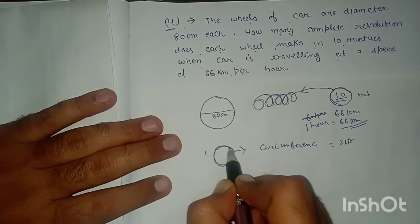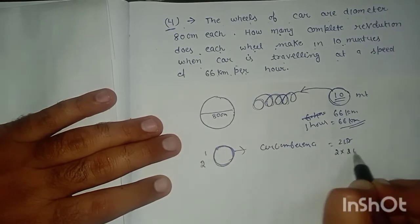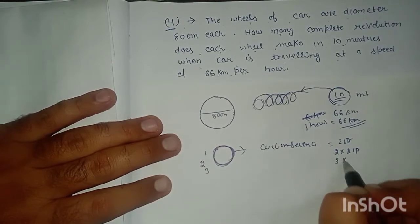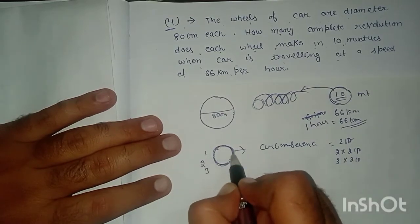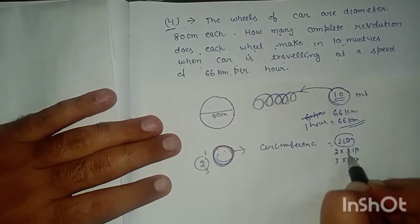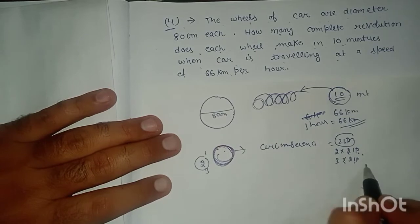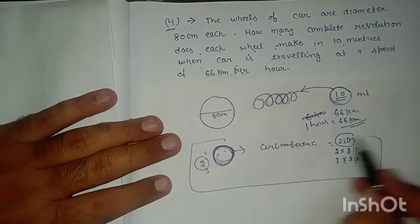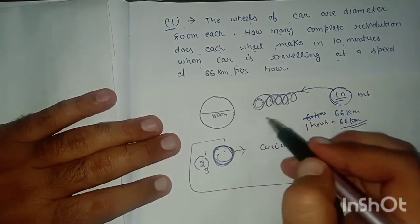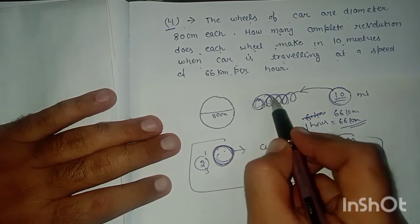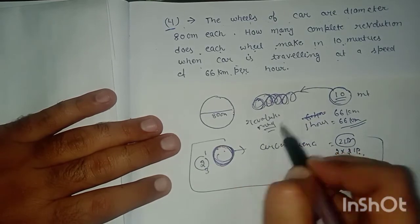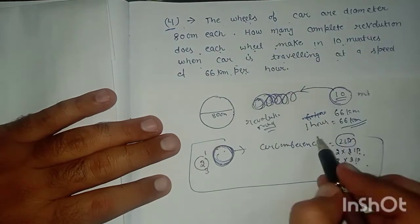The circumference formula is 2πr. This is what we need to calculate - the circumference of the wheel, which represents the distance covered in one revolution.